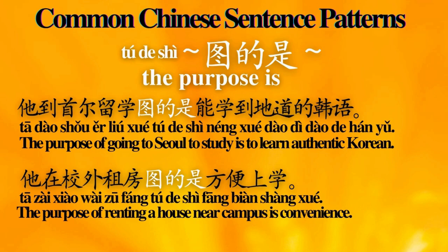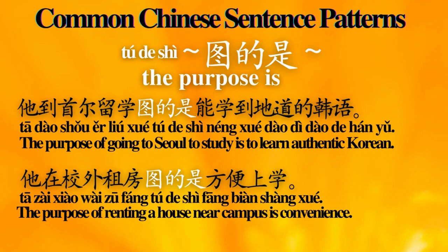Number 5: 图的是 — 'The purpose is.' Sentence examples: 她到首尔留学，图的是能学到地道的韩语。 The purpose of going to Seoul to study is to learn authentic Korean. 她在校外租房，图的是方便上学。 The purpose of renting a house near campus is convenience.